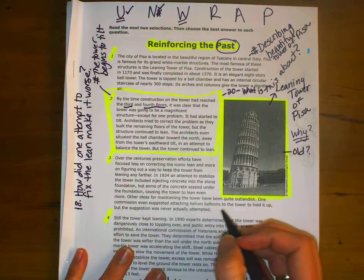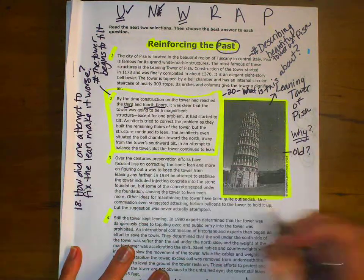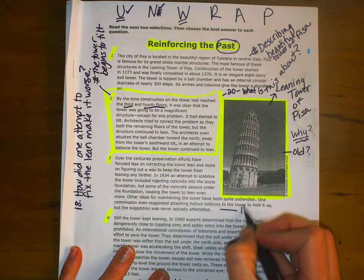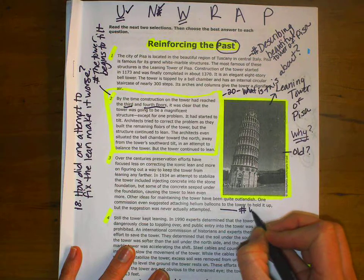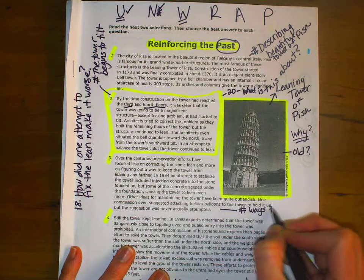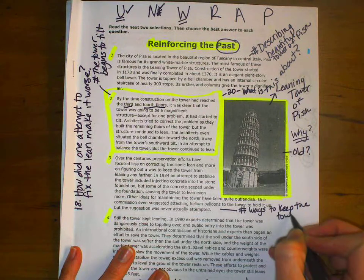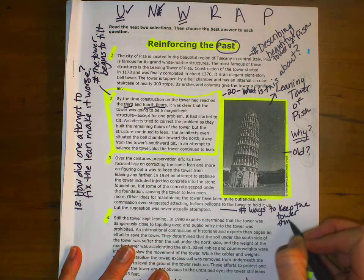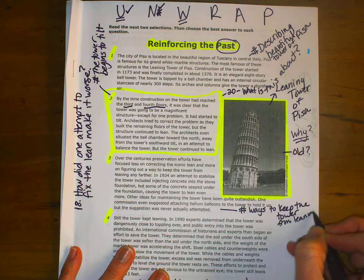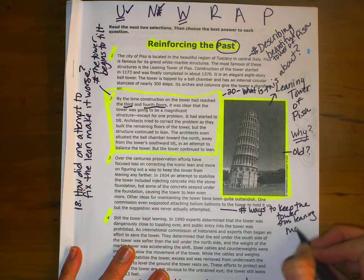So I'm going to say this is hashtag ways to keep the tower from leaning more.